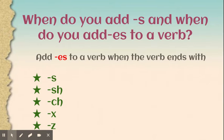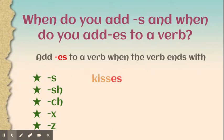So when do we add -s and when do we add -es? There is a rule. You are going to look at the end of the word, and if the word ends with -s, -sh, -ch, -x, or -z, you're going to add -es. For example, the word 'kiss' ends with an -s, so we say 'kisses' by adding -es.